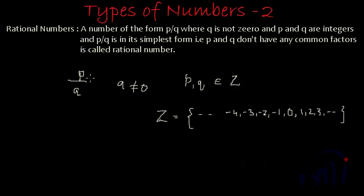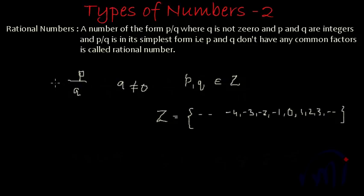P and Q should be in such a way that they don't have any common factor. That means the fraction should actually be in its simplest form. If they have any common factor, divide both numerator and denominator by that common factor and you will arrive at the simplest form of the fraction, which is called a rational number.